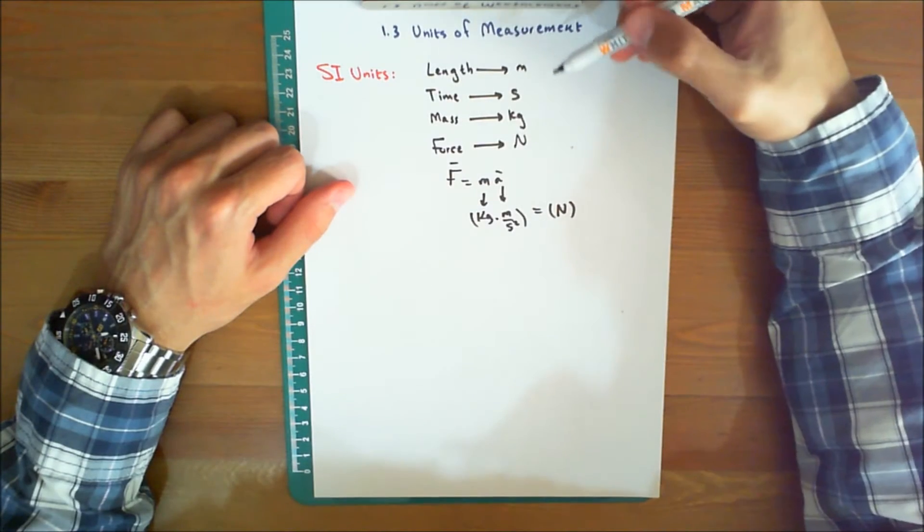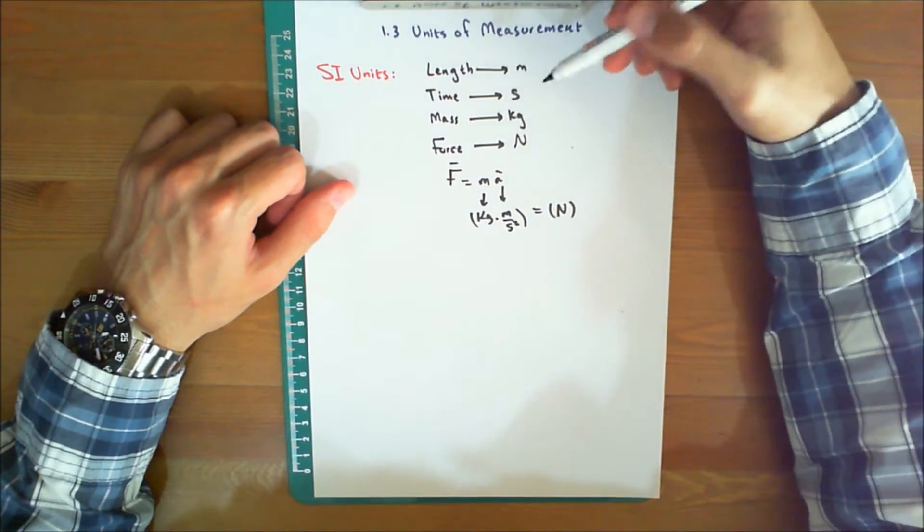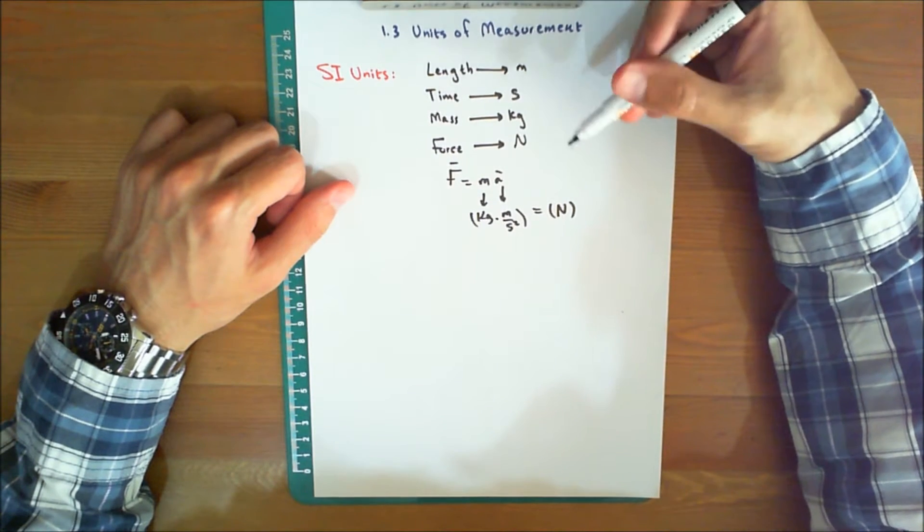Units of Measurement. The International System of Units, abbreviated SI after the French Systeme Internationale L'Unité, is a modern version of the metric system which has received worldwide recognition.